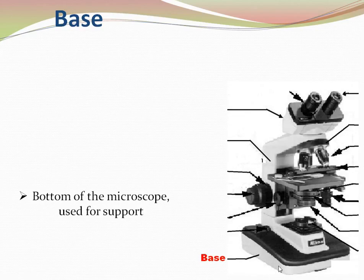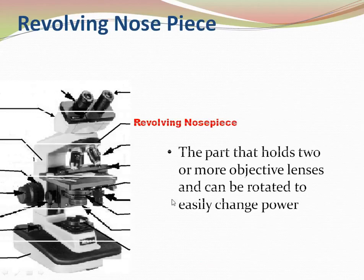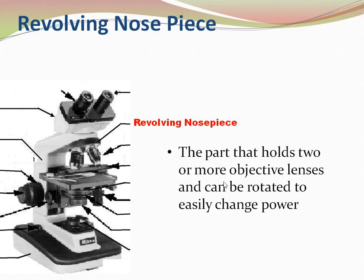The base is the main support of the microscope at the bottom. The revolving nosepiece holds two or more objective lenses that can be rotated easily to change the power of the objective. We can easily change between low power, high power, or oil immersion lens using the revolving nosepiece.